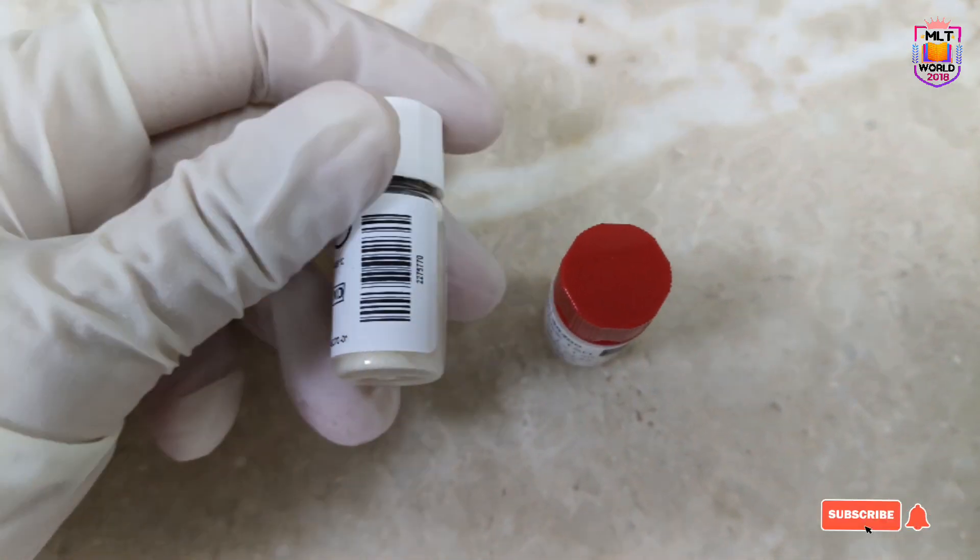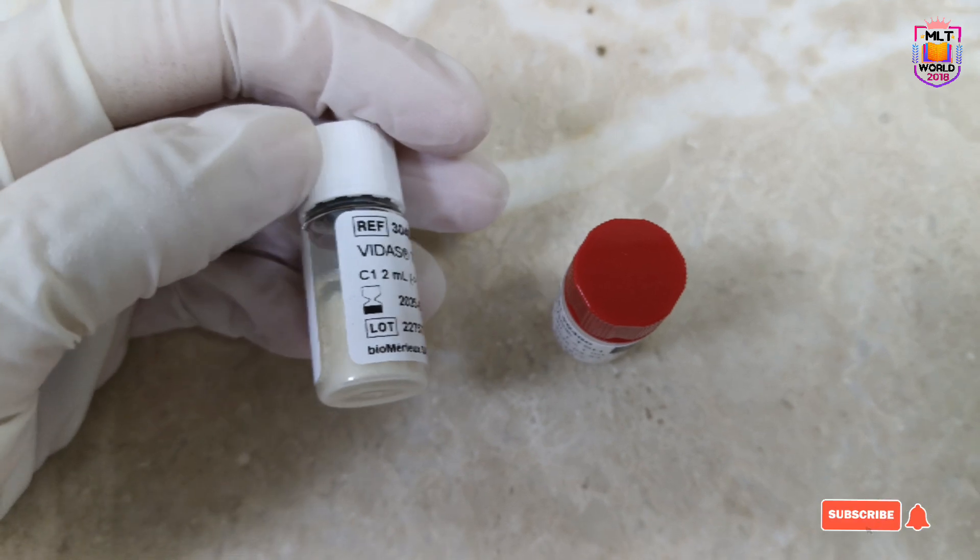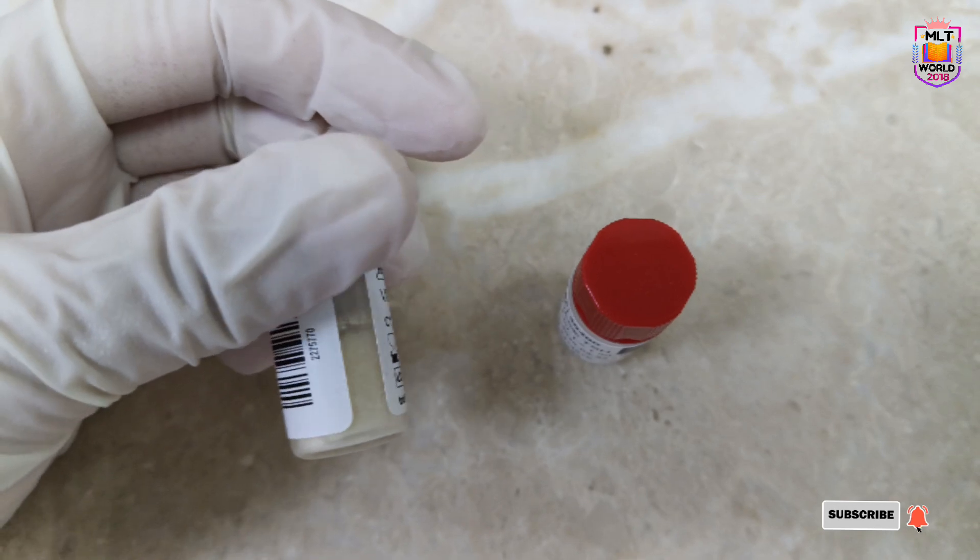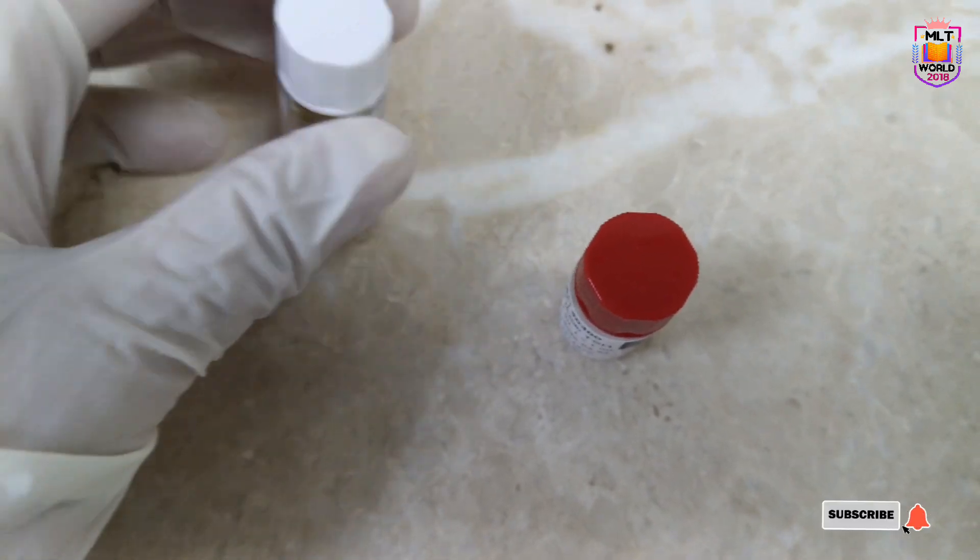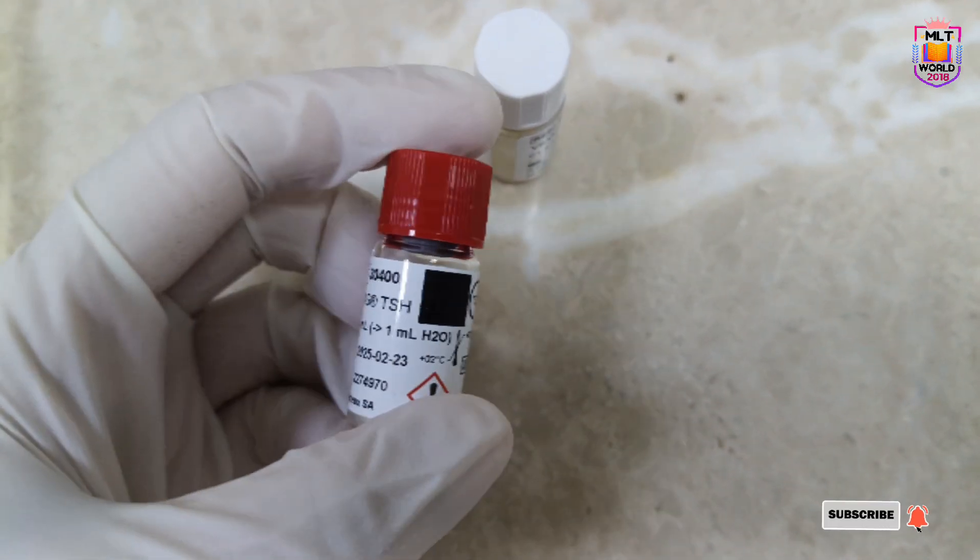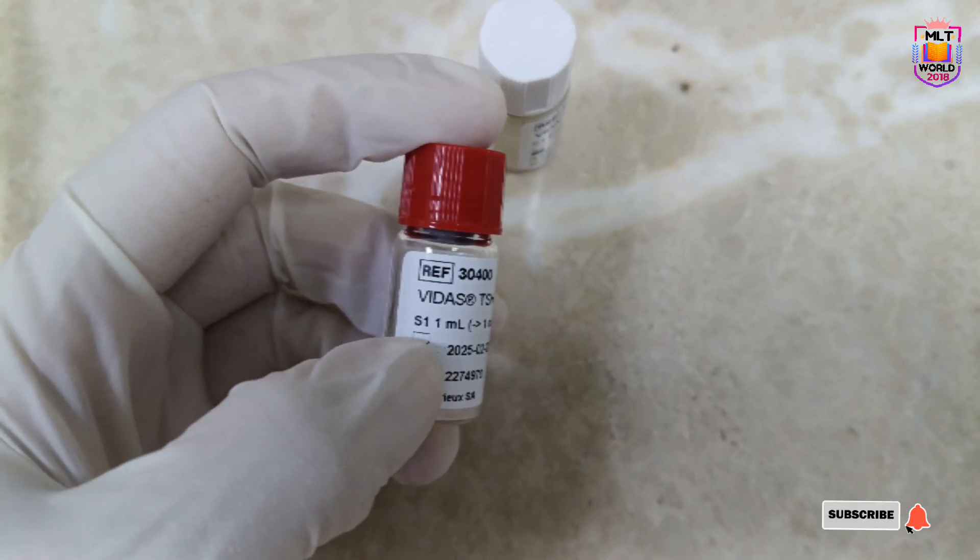Welcome back to MLT World. Today I'm going to share how to dilute calibrators and controls in the laboratory. When controls and calibrators come in lyophilized form, we normally have to store them at 2 to 8 degrees centigrade.